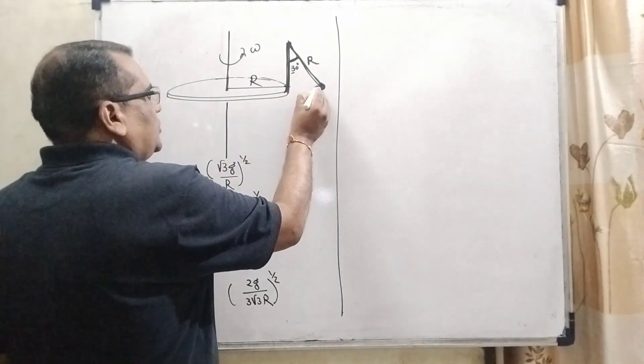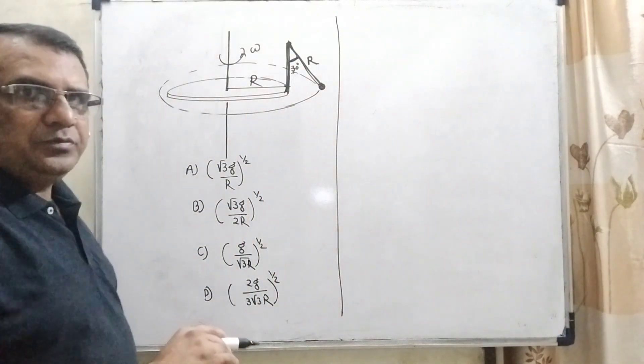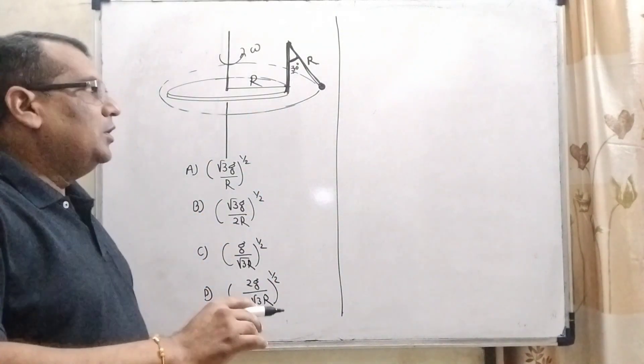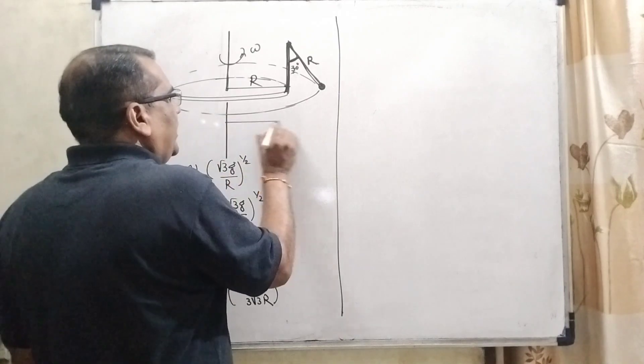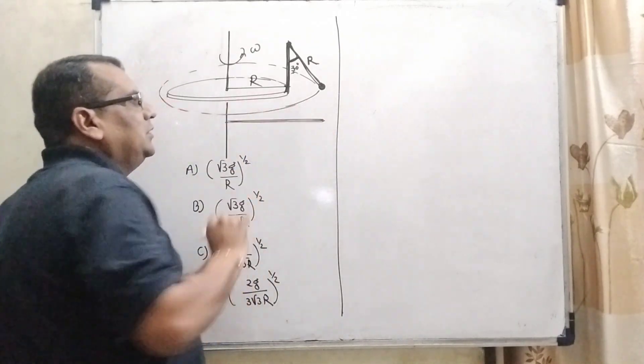So, when it is rotated along with the disc making circular motion, here effective radius, we have to, let us first, we have to find out effective radius.